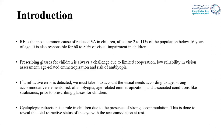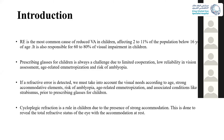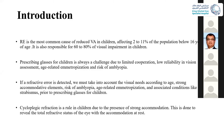Prescription of glasses in children is not easy. It is most challenging due to limited cooperation of the children and low reliability in the vision assessment, age-related emetropization, and risk of emmetropia. If refractive error is detected, we must take into account the vision need according to the age, the strong accommodative element, risk of emmetropia, age of emetropization, and associated conditions such as strabismus before prescribing glasses for children.